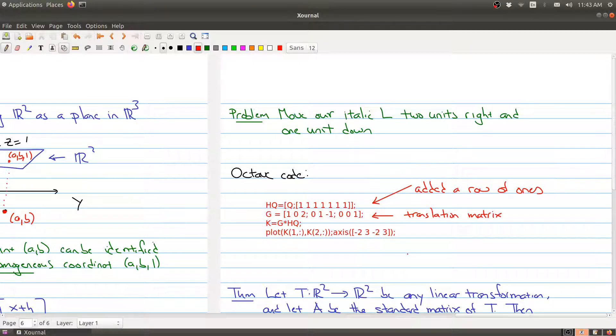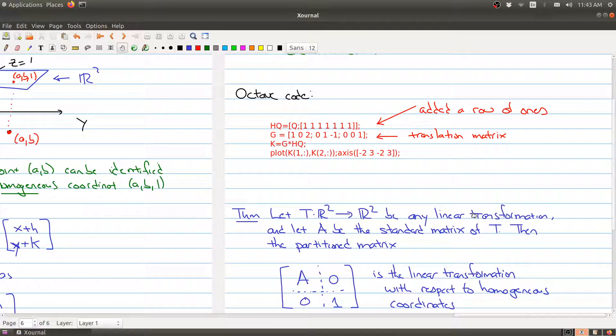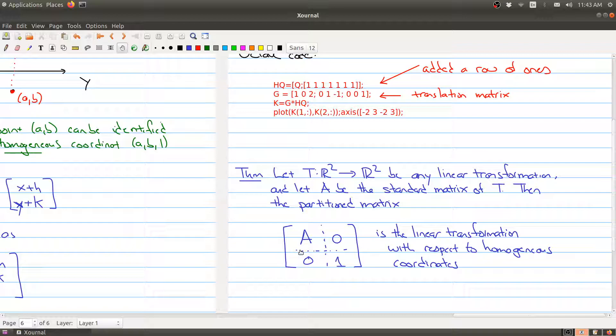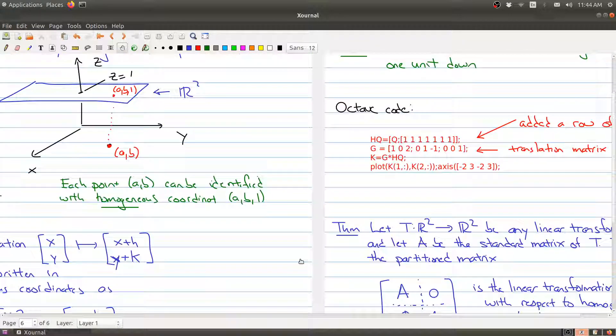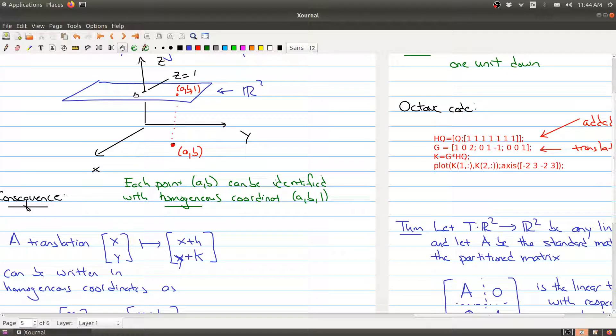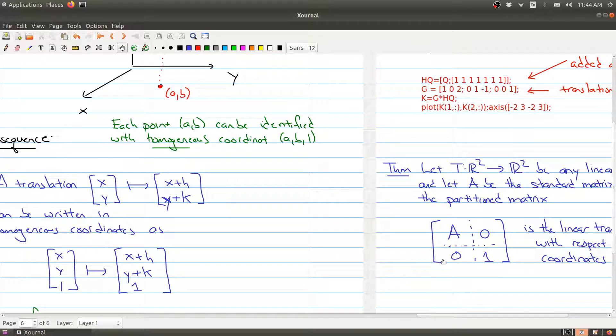Okay, so what we've just done here with the homogeneous coordinate actually can be extended more generally. Let's say that you had any linear transformation - it could have been a shear, a scalar, a rotation, or a flip - and it's given by some linear transformation with standard matrix A. Then you can make a new partition matrix where in the top you would put the matrix A over here, here would be a matrix of zeros, and in the bottom corner you'll put 1. What you get is the linear transformation with respect to homogeneous coordinates. In other words, if you were doing some of those operations we talked about, you can still do them. The only difference is now you make your matrix a little bit bigger and you put a 1 in the bottom right corner and fill up the remaining rows and columns with zeros.